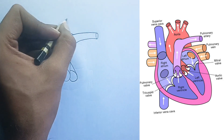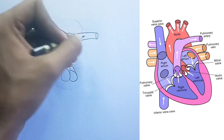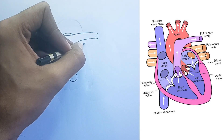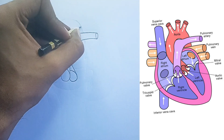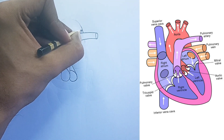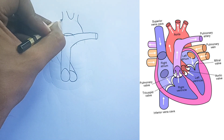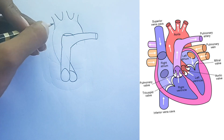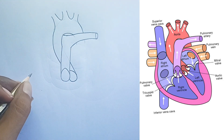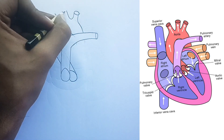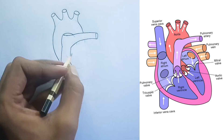Major blood vessels. Superior vena cava: carries deoxygenated blood from the head, arms, and upper torso to the right atrium. Inferior vena cava: carries deoxygenated blood from the legs, abdomen, and lower torso to the right atrium. Pulmonary artery: carries deoxygenated blood from the right ventricle to the lungs. Note: arteries usually carry oxygenated blood, but the pulmonary artery is an exception.